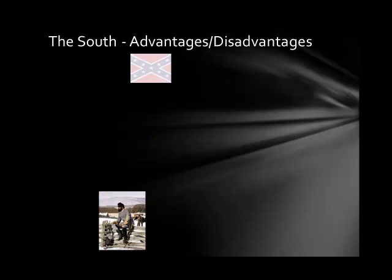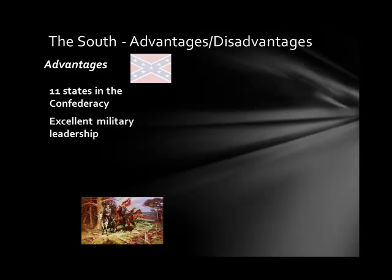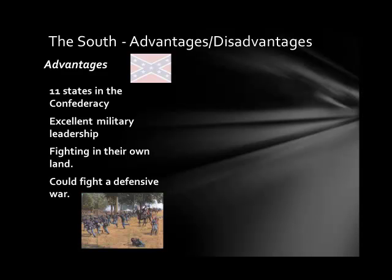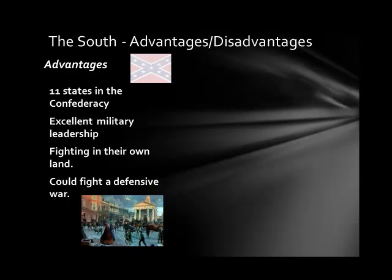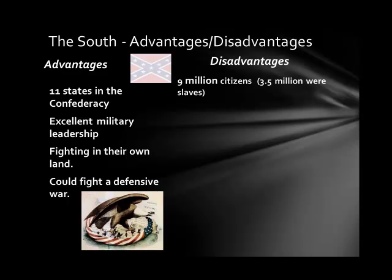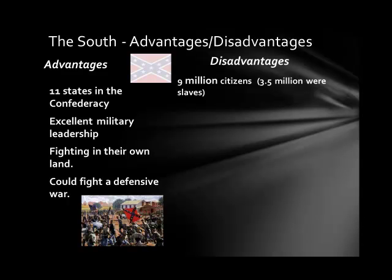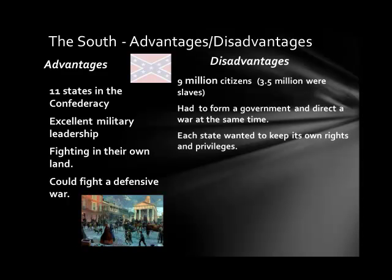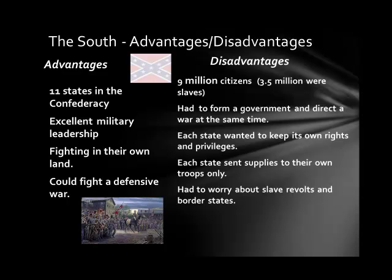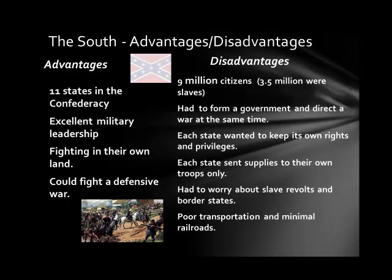The South had advantages and disadvantages at the beginning of the Civil War. Advantages included the 11 Confederate states, the excellent military leadership of Robert E. Lee, fighting in their own lands with knowledge of the territory, and the ability to fight a defensive war. Disadvantages included having 9 million citizens but 3.5 million were slaves who were not allowed to fight, effectively lowering the fighting population to 4.5 million. They also had to form a government while directing a war, each state kept its own rights and sent supplies only to its own troops, they had to worry about slave revolts and border states, and they had poor transportation, minimal railroads, and a distinct lack of industry.